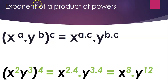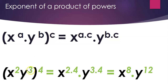Last but not least: when you have the exponent of a product of powers — for example, x raised to the power a times y raised to the power b, and the whole thing is raised to the power c — the answer is x raised to the power a times c, multiplied by y raised to the power b times c. For instance, (x squared times y cubed) raised to the 4th power simplifies to x raised to 2 times 4, times y raised to 3 times 4, which is x to the power 8 times y to the power 12.